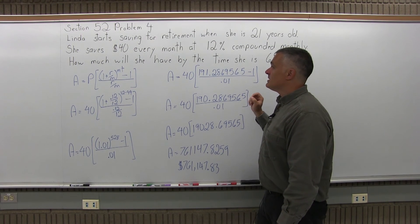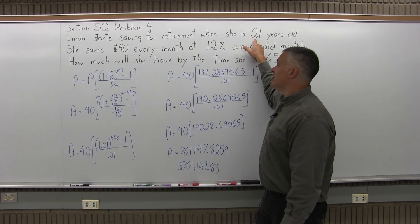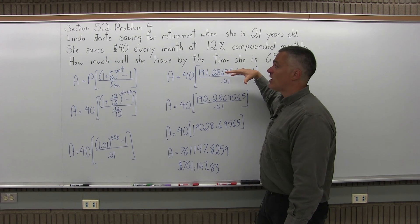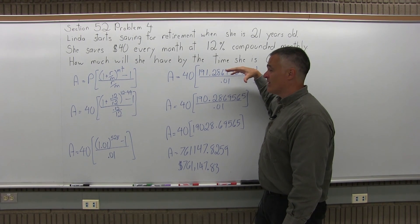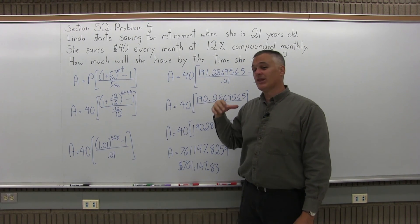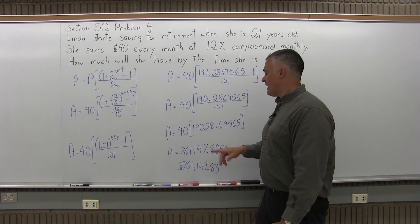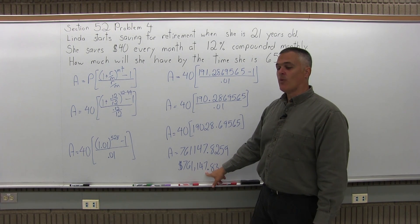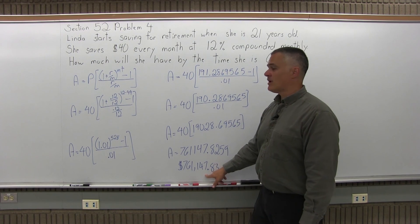So she's saving very little, but starting at a very young age, age 21. And you'll see in the next problem, we compare this to Linda's brother, who starts saving much later in life, but much more every month. And what you'll find out is Linda comes out way ahead. So we'll see that in problem five.